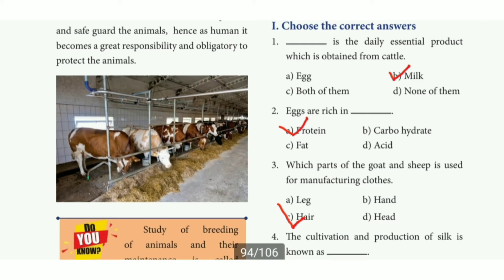Choose the correct answer. First one: the daily essential product which is obtained from cattle — the answer is option B, milk. Second one: eggs are rich in — the answer is option A, protein. Third one: which part of the cotton and sheep is used for manufacturing clothes? The answer is option C, hair.